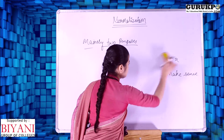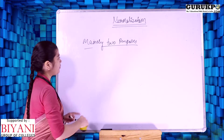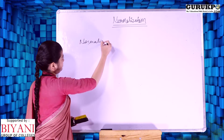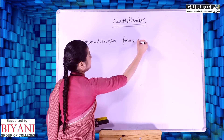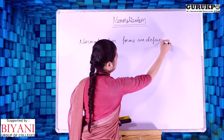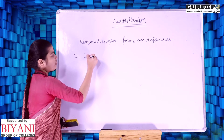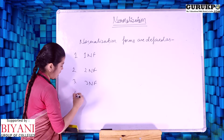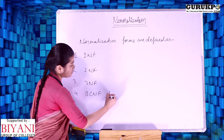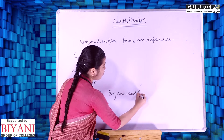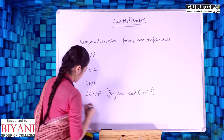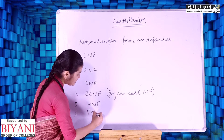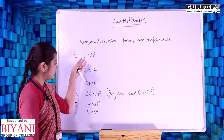Normalization has various forms defined in Database Management System. These normalization forms are: First Normal Form (1NF), Second Normal Form (2NF), Third Normal Form (3NF), then BCNF, Fourth Normal Form (4NF), and finally Fifth Normal Form (5NF).